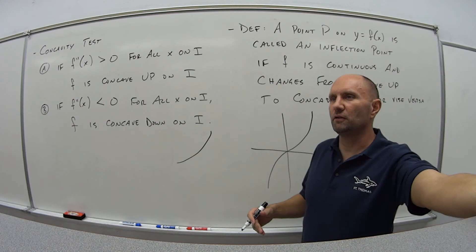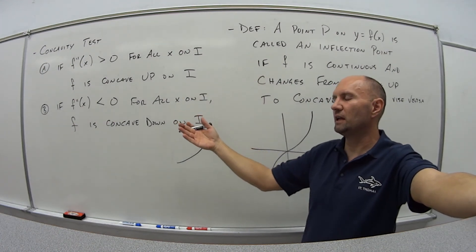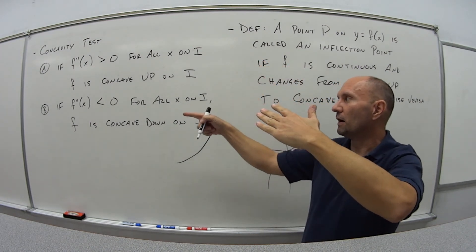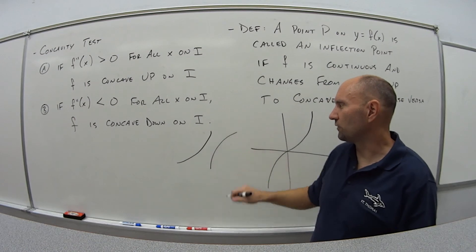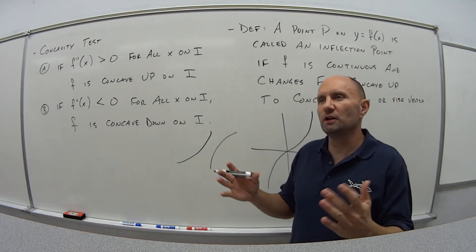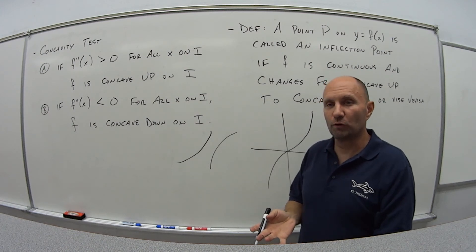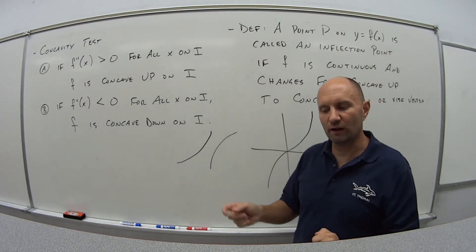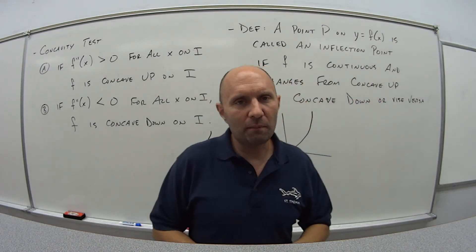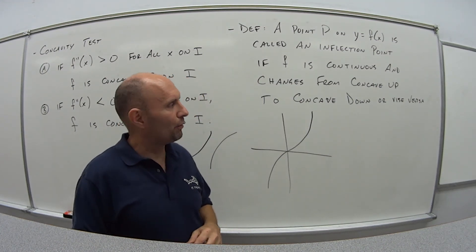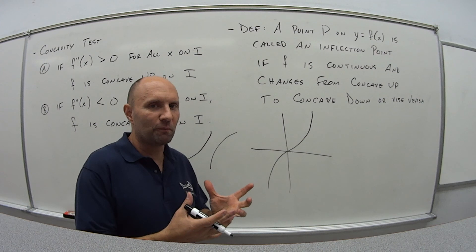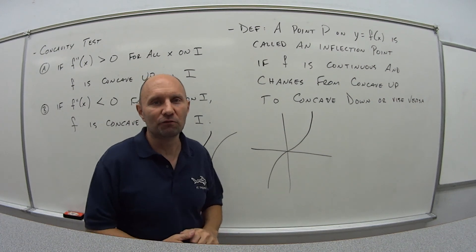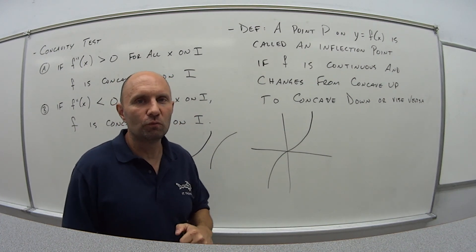If the first derivative is positive but the second derivative is negative, it means the function is still increasing but concave down, so it looks like a hill curving over. Knowing the sign of the first and second derivatives tells you what the graph looks like at any point. In video three we'll look at an example where I give you information about the derivatives and you sketch what the graph could look like. That wraps up video two — see you in video three.